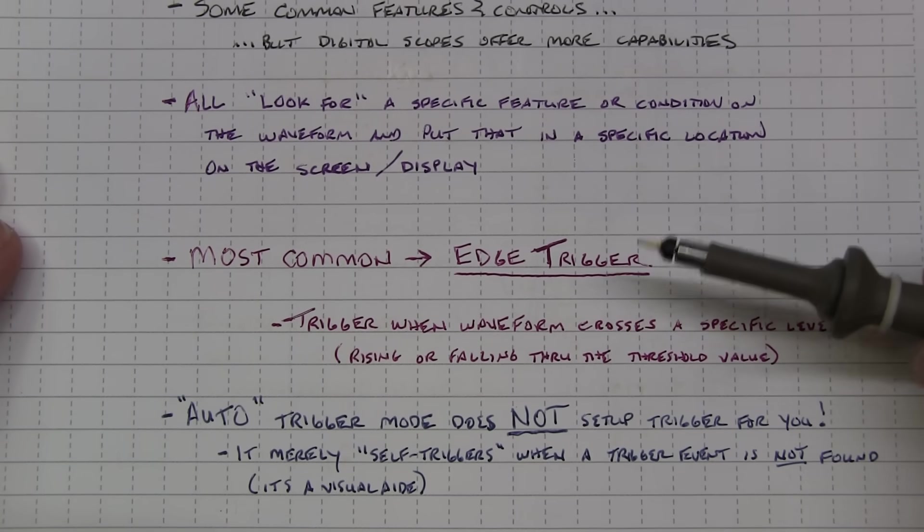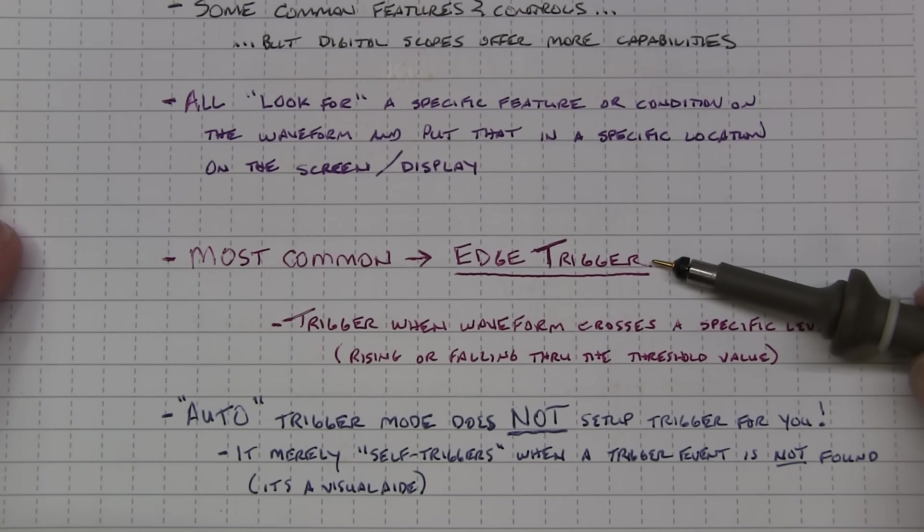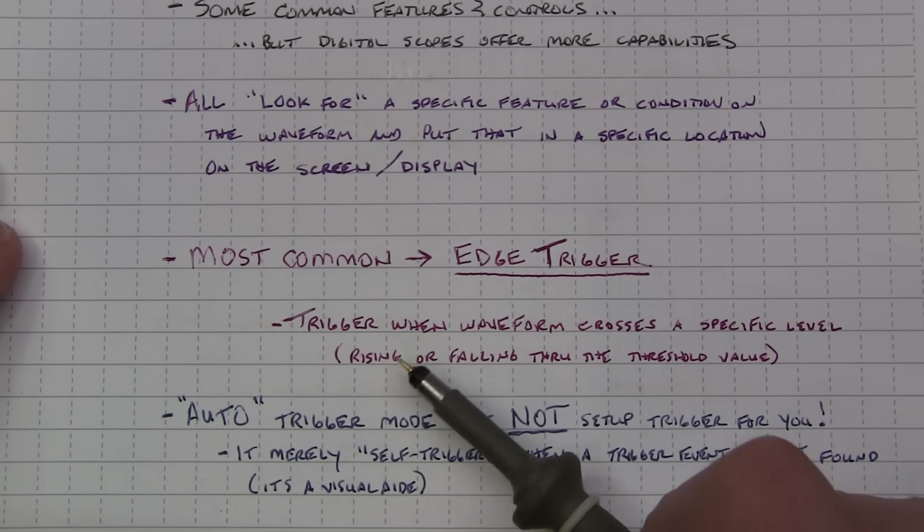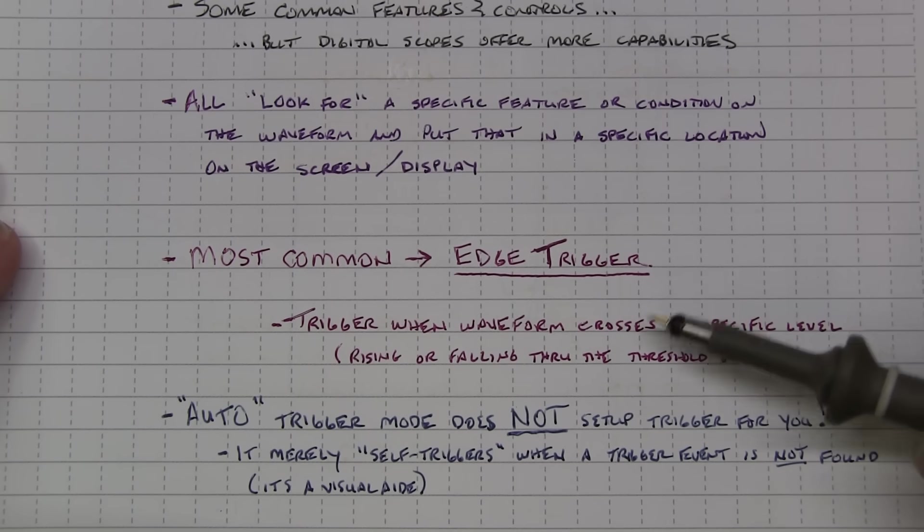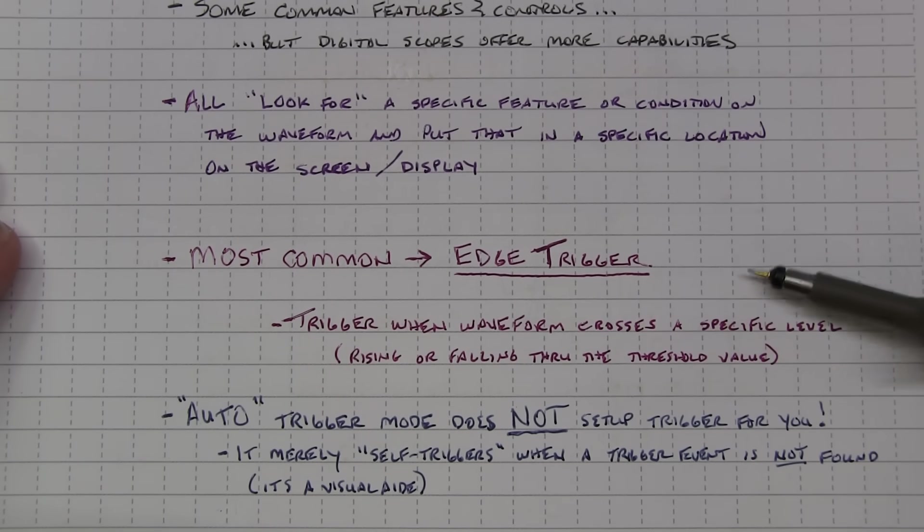We'll focus our time today just on the most common trigger type that's used, probably 95% of the cases, something called an edge trigger. And what that is, is the scope is looking to trigger when the waveform crosses a specific voltage level that we'll call a threshold, a trigger threshold. And it could be when the input signal is rising above through that threshold or falling through that threshold. And that's often called the slope, rising slope or falling slope. So the setup is basically telling the trigger system what signal to look at, what threshold you want to set, and whether you want to trigger on the rising or falling edge.